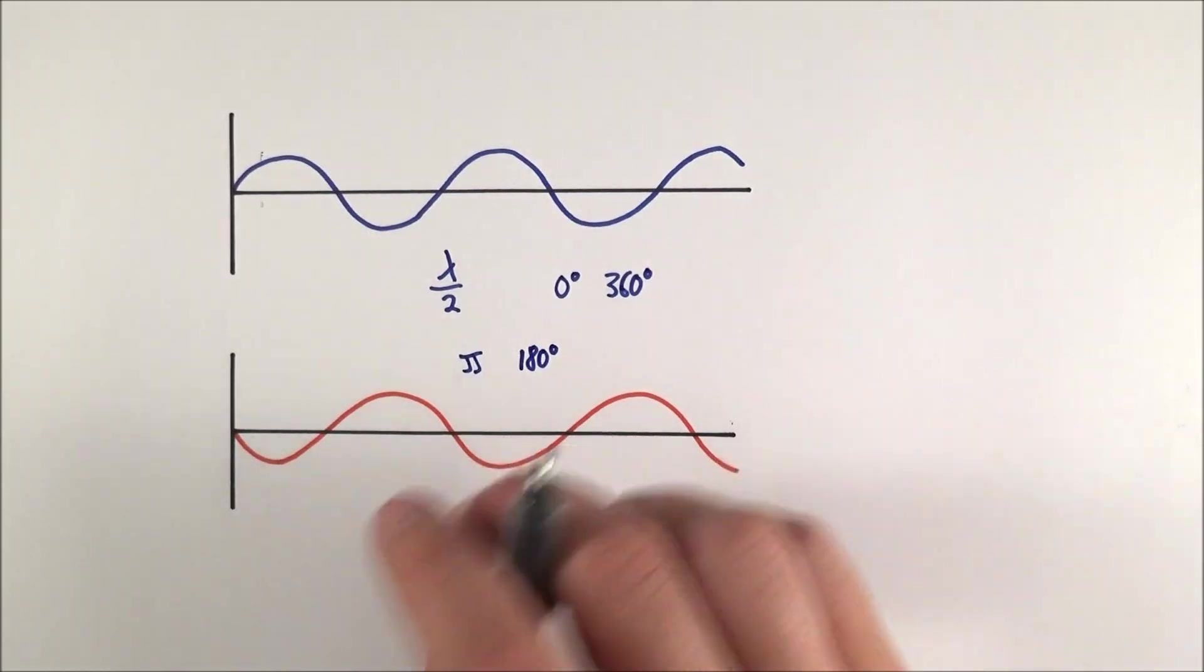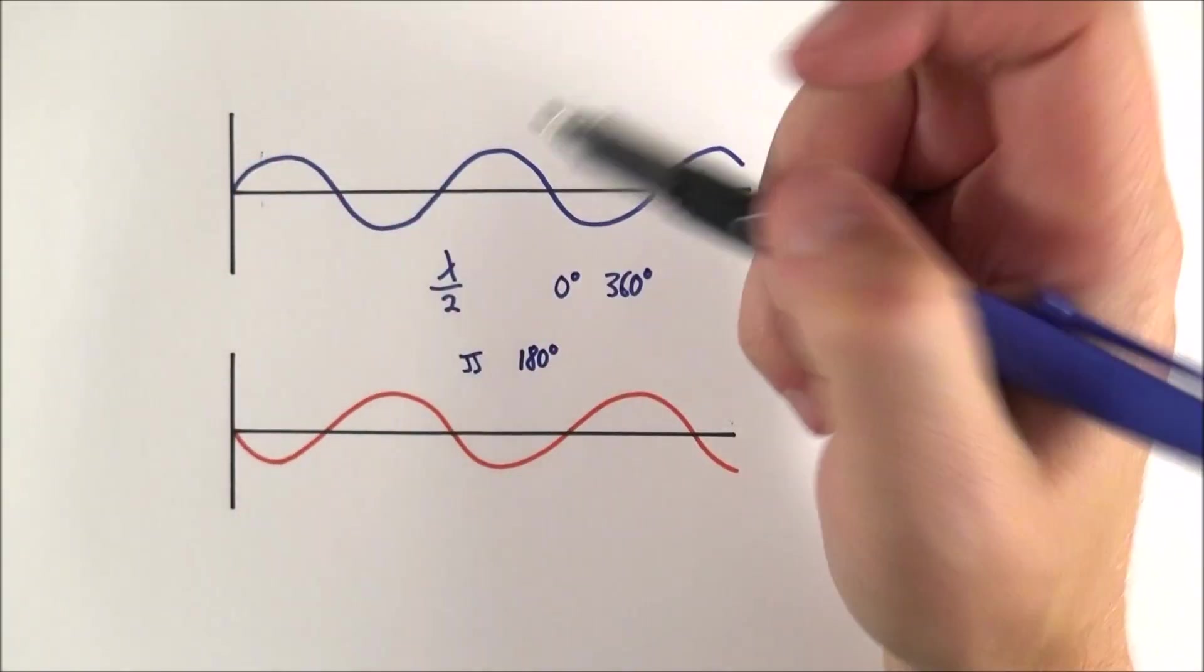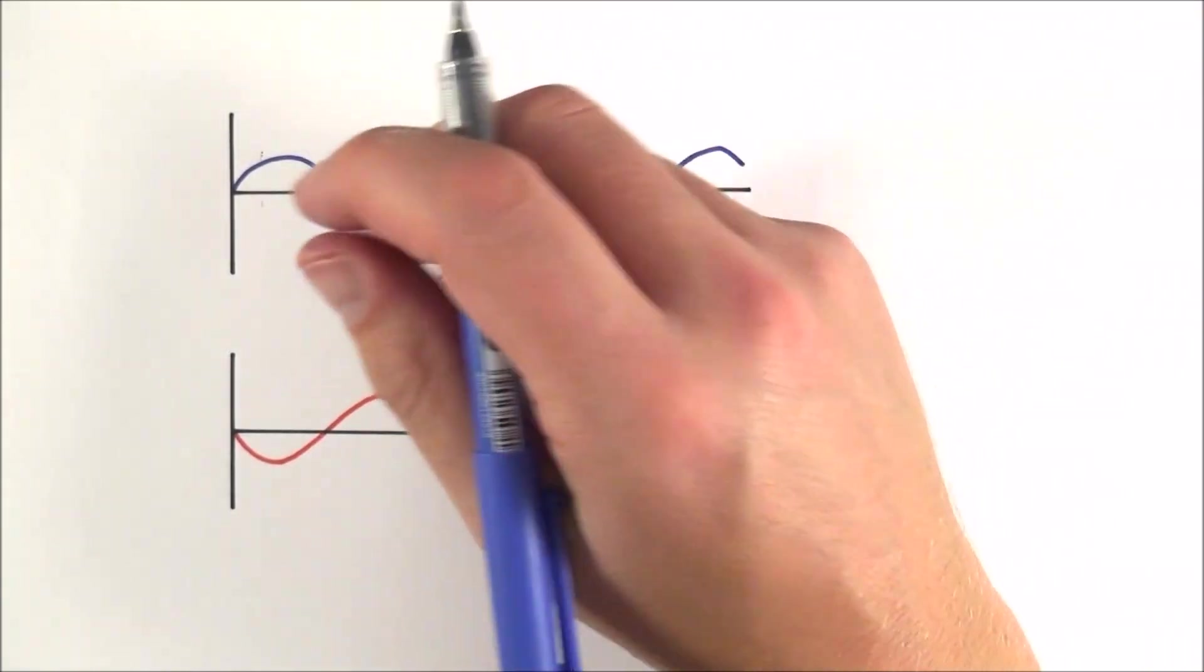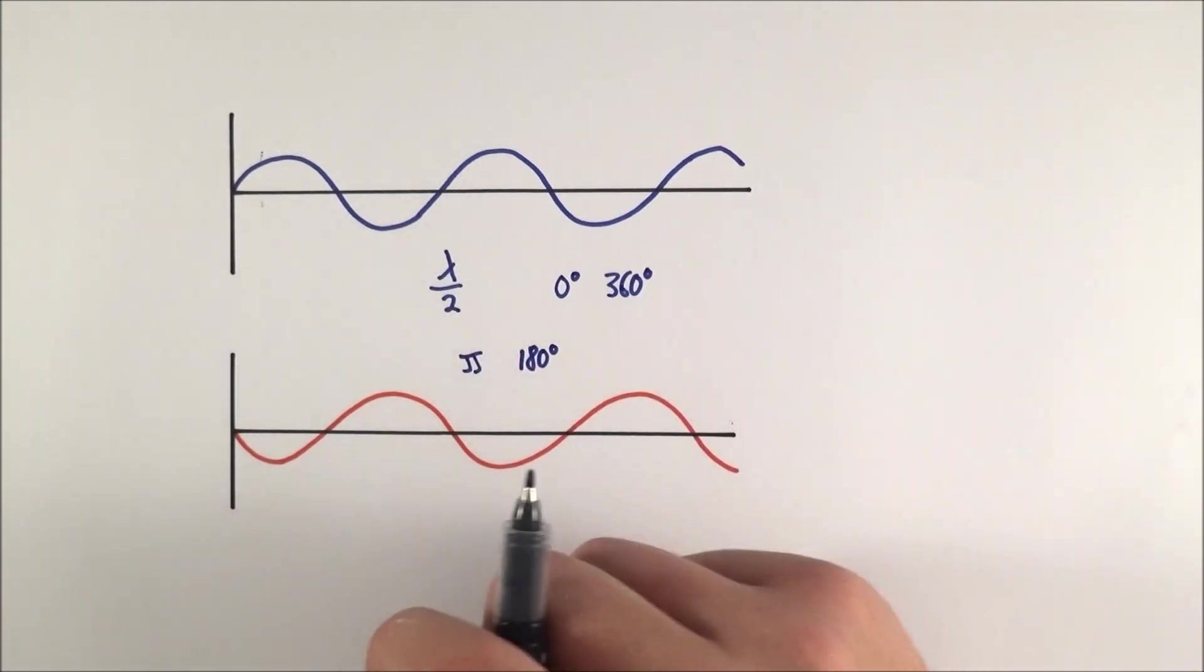It's quite straightforward to calculate the phase difference if you know the wavelength, and it's just linking the fact that one complete wave is equivalent to 360 degrees or 2π radians.